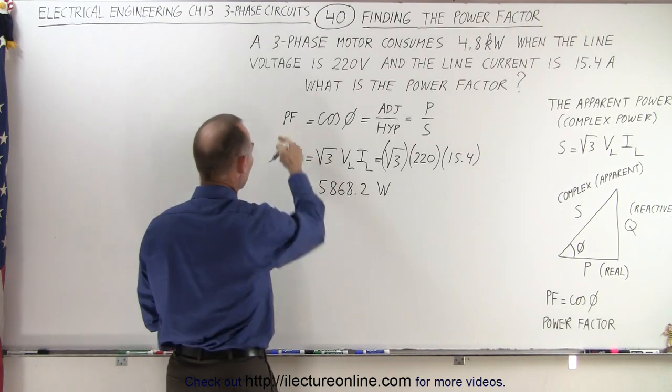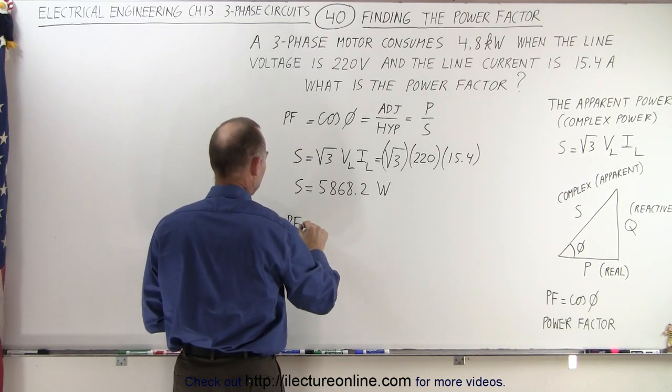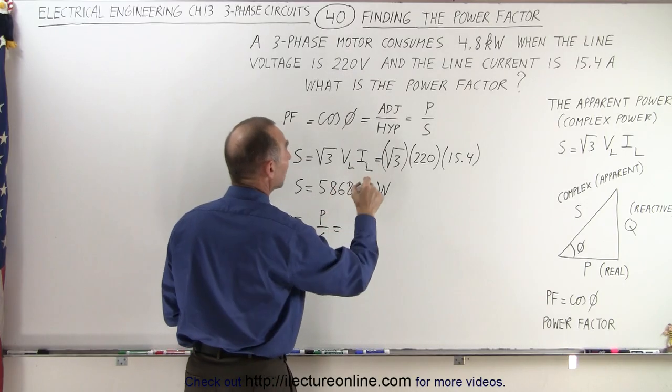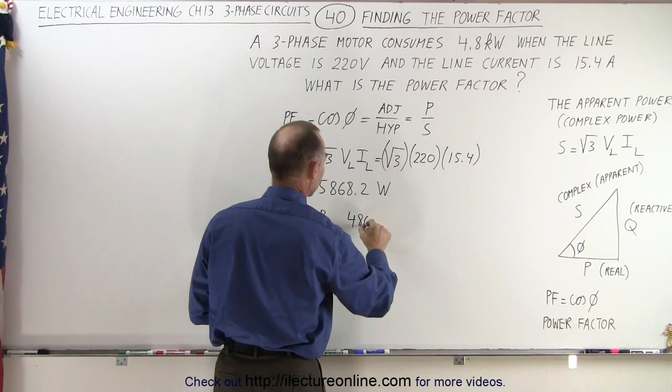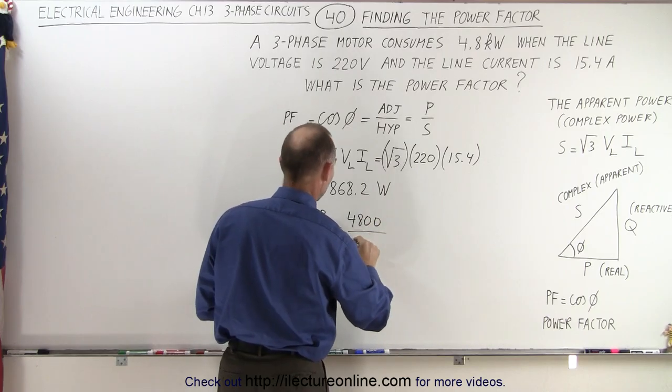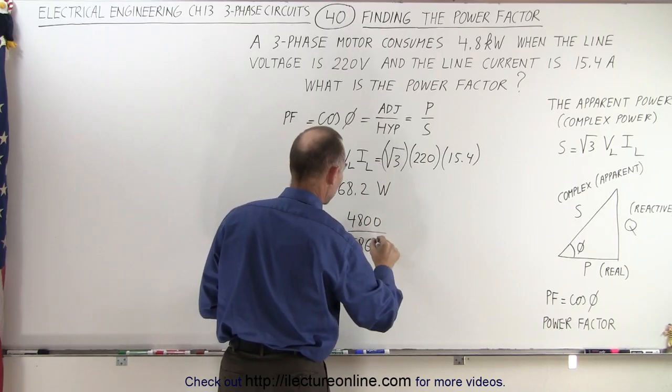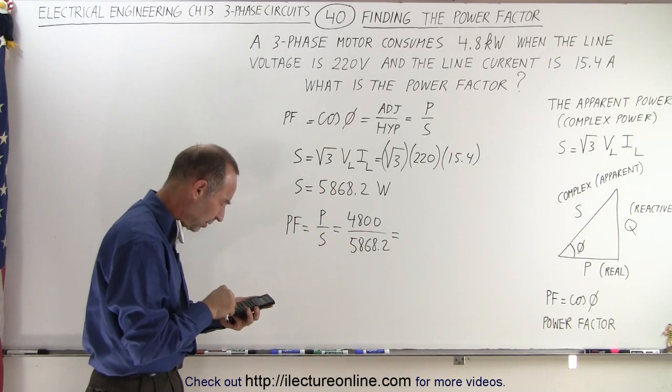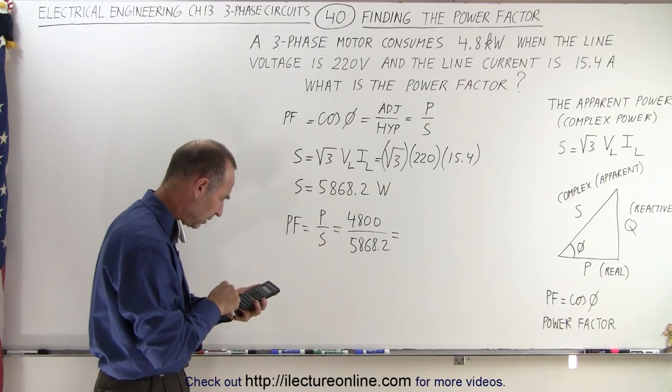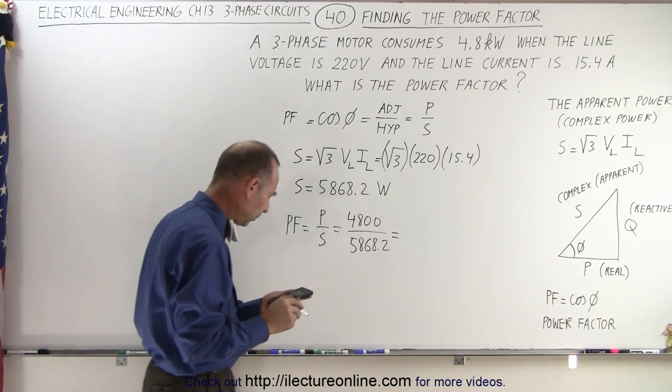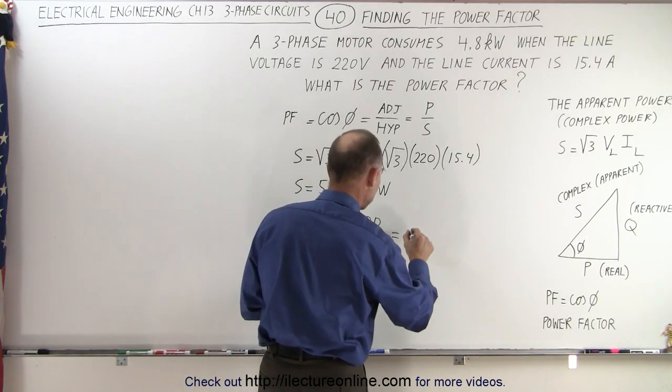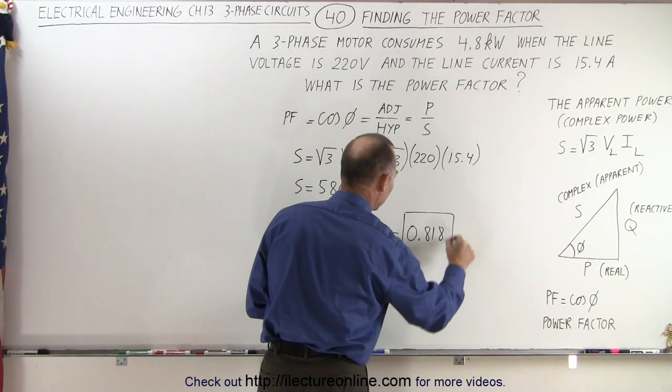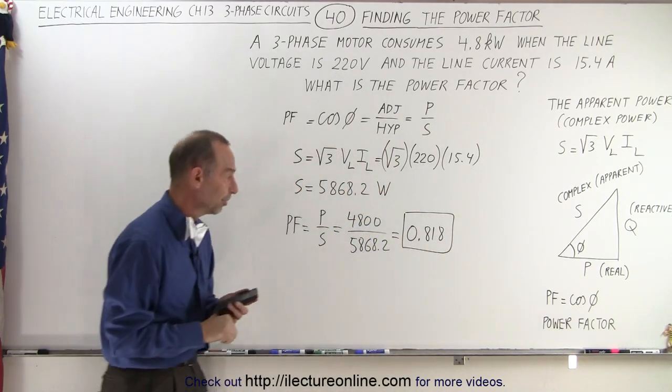Now we can see that the power factor is equal to the ratio of P over S. P is 4800. S is 5868.2. And let's take that times 4800 equals and that would be 0.818. 0.818 is the power factor of this particular system.